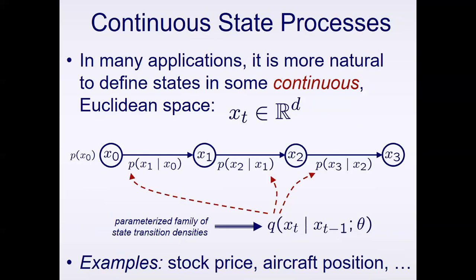In many applications, it's going to be natural to define the states in some continuous Euclidean space rather than a discrete space. Depending on the application, we may wish to use a discrete or continuous random variable. We'll look at some examples moving forward later in the slides.